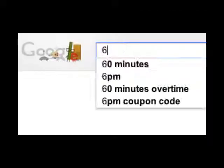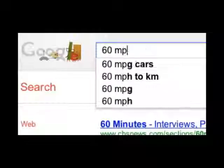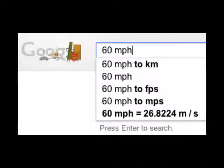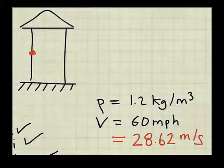To convert my wind speed from 60 miles per hour, I go to Google, type in 60 miles per hour, and I don't have to do anything, and I see my answer right there. 26.8 meters per second. Next, I go back to my problem documentation and capture this information.